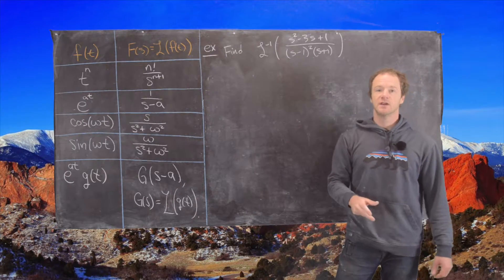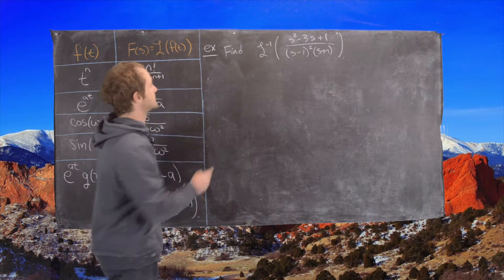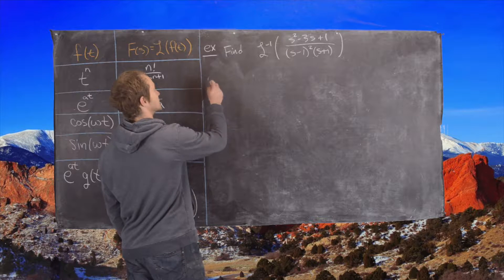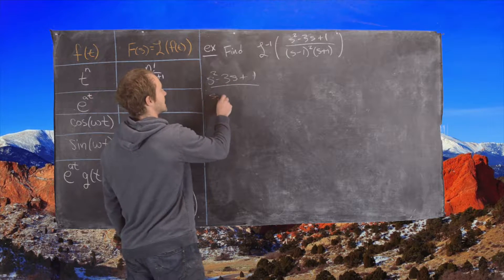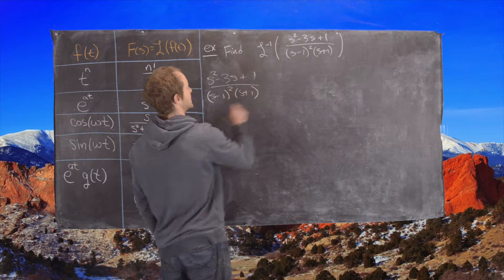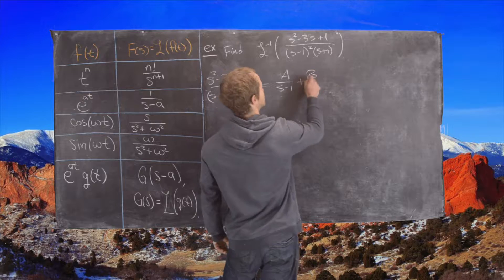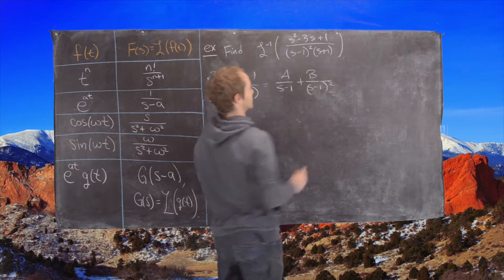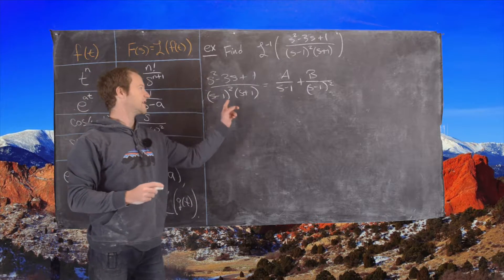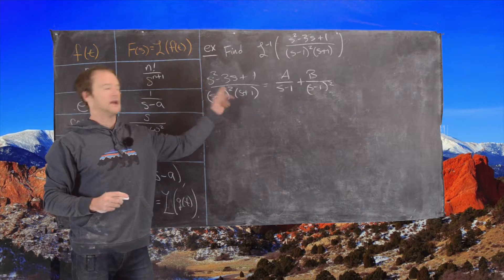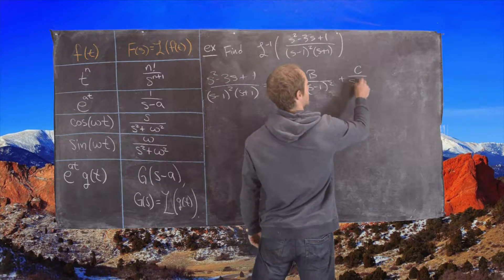we need to decompose the inside of this inverse Laplace transform using partial fractions. Notice our denominator is already factored, so there's no factoring that needs to be done. We can immediately set up the equation: that equals A over s minus 1, plus B over s minus 1 squared. Recall from partial fraction decomposition, you need to include terms up to the power present. And finally, plus C over s plus 1.